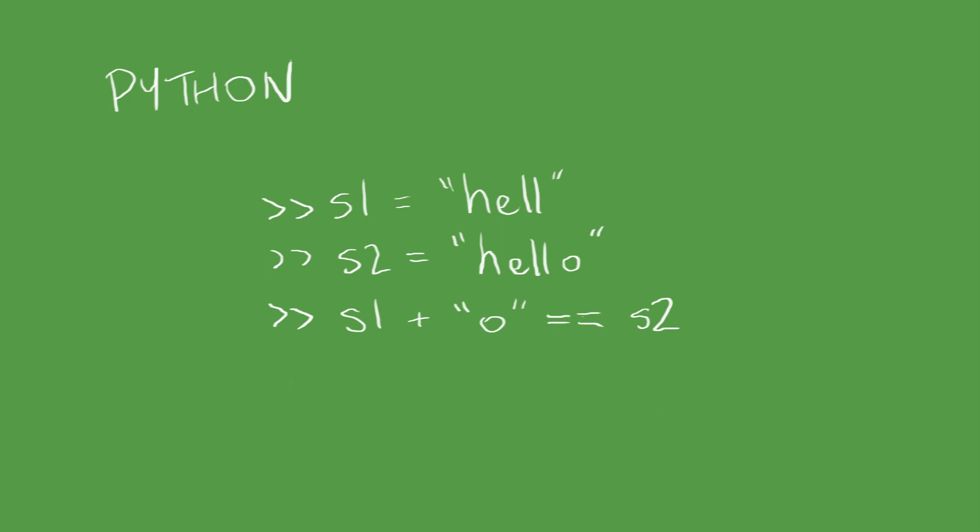Now, if we were to use the equality operator, equals equals, Python would properly report that these strings are the same. But we're using is, which tests for identity. And because the result of S1 plus O is not interned, these strings have a different identity.